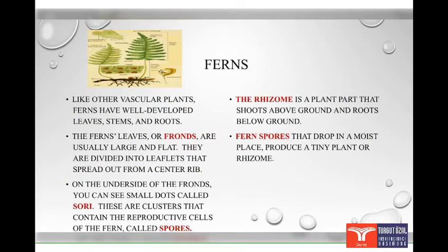Let's say some characteristics of ferns. Like other vascular plants, ferns have well-developed leaves, stems and roots. The ferns' leaves, or fronds, are usually large and flat. They are divided into leaflets that spread out from a center rib. On the other side of the fronds, you can see small dots called sori. These are clusters that contain the reproductive cells of the fern, called spores.